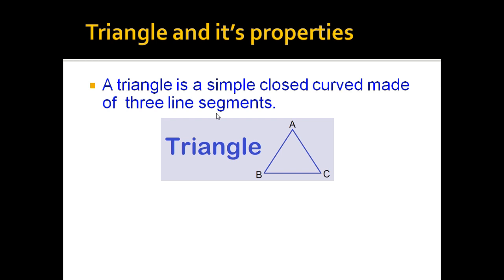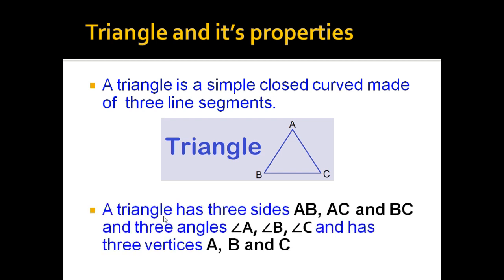A triangle has three sides — AB, AC, and BC — three angles: angle A, angle B, and angle C, and three vertices, which are simply the named points A, B, and C.